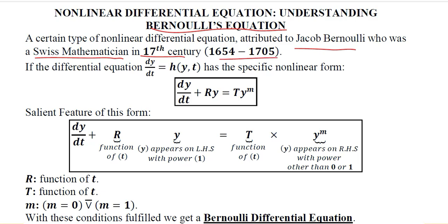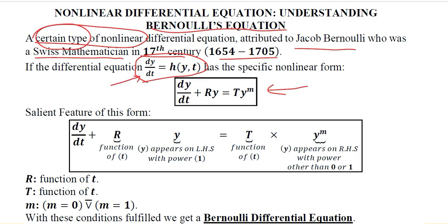It is a certain type of nonlinear differential equation. We will see why it is called a certain type by looking at its standard form. Here we are mentioning the functional form: dy/dt is equal to h(y, t), meaning the derivative over time of this variable is a function of y and t. When we write it in a specific form, it will look like this.